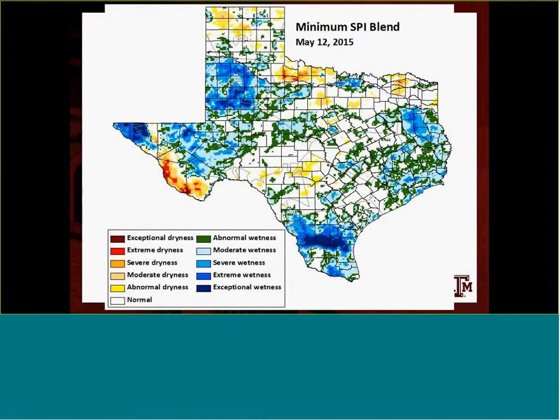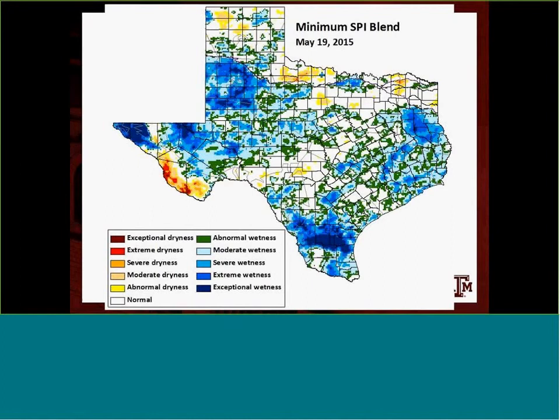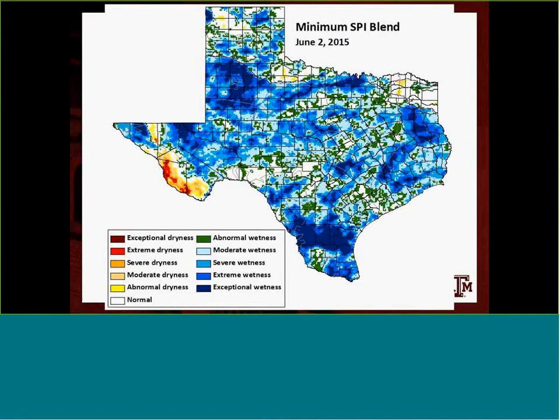That continued to improve, and this last frame shows the current conditions where you're hard-pressed to find any dry areas except in the Trans-Pecos region where there's poor radar coverage.